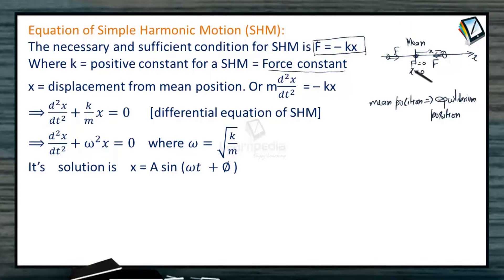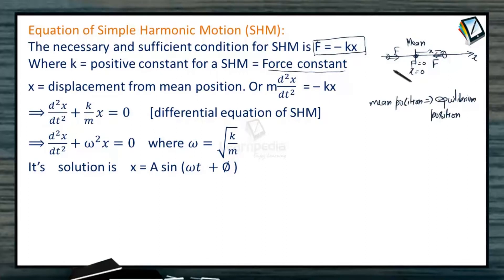This restoring force is always trying to bring the particle back. The oscillation will keep going as long as the energy is there. But in the case of simple harmonic motion, since it is an idealized assumption, there is no loss of energy. So simple harmonic motion will keep going for an infinite time — it should never stop, according to the theory. Here x is the displacement from the mean position.